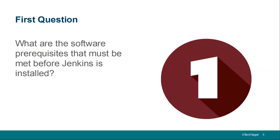Question number one: what are the software prerequisites for installing Jenkins? The answer to that question is the JDK. The only thing you need to run Jenkins is the JDK. Since version 2.5.4, I believe it is JDK version 1.8 or newer, but fundamentally the only thing you need in order to run Jenkins is the JDK.